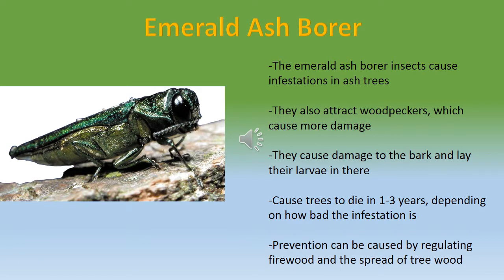Ash borer insects cause infestation in ash trees. They burrow inside ash trees to lay their larvae, causing significant damage. They also attract woodpeckers, which peck at the larvae and damage the bark. The infestation of the emerald ash borer can cause a tree to die within one to three years depending on the severity — in one year if particularly bad, or two to three years if moderate.